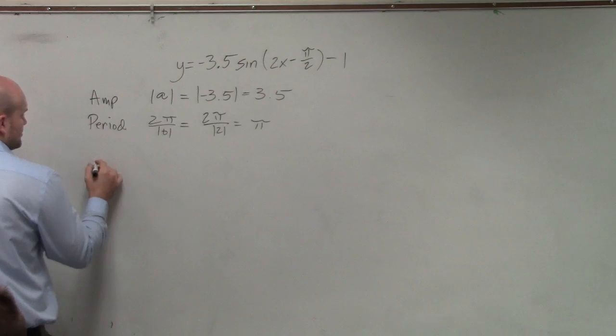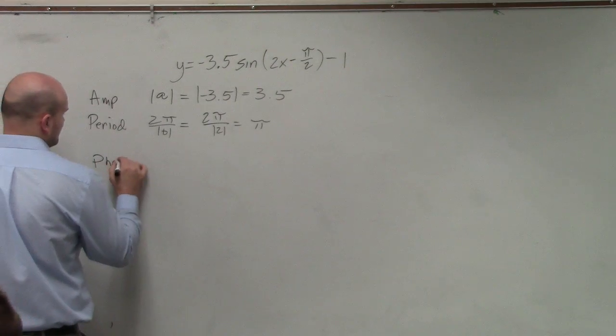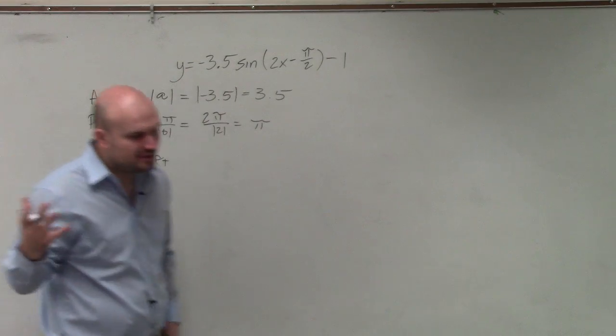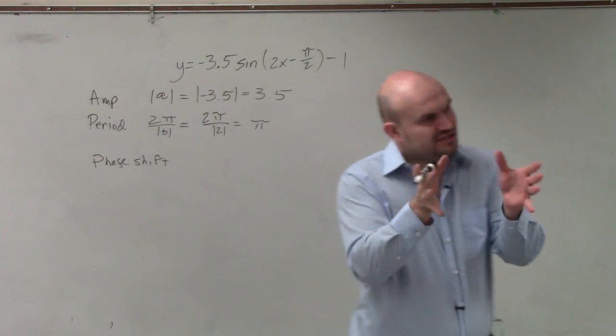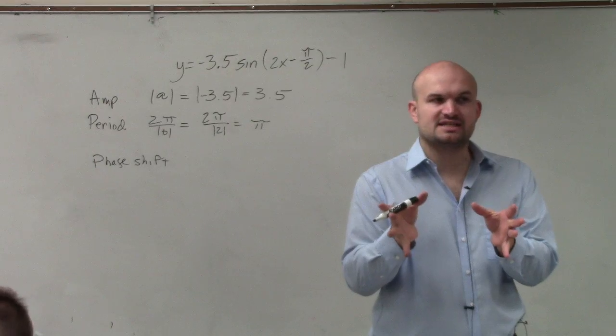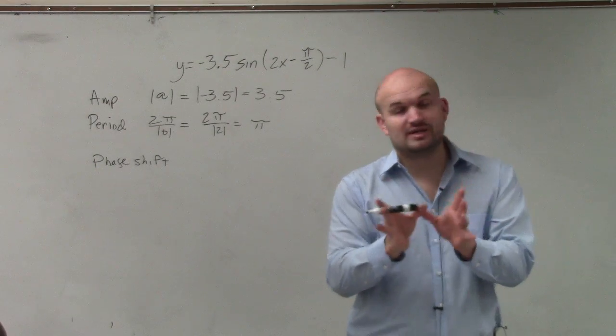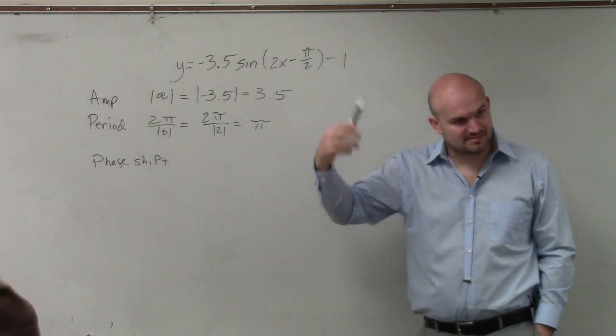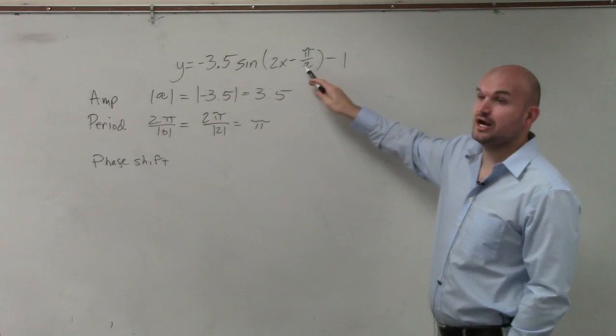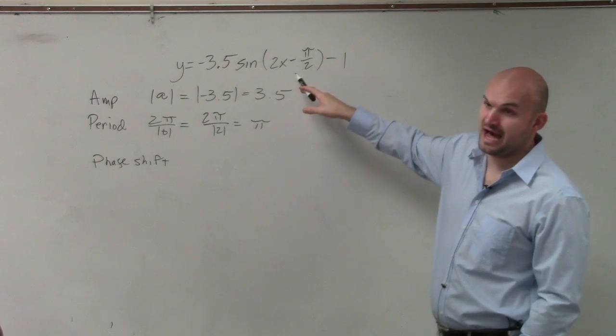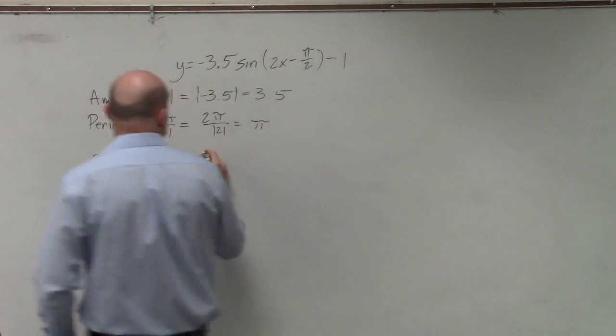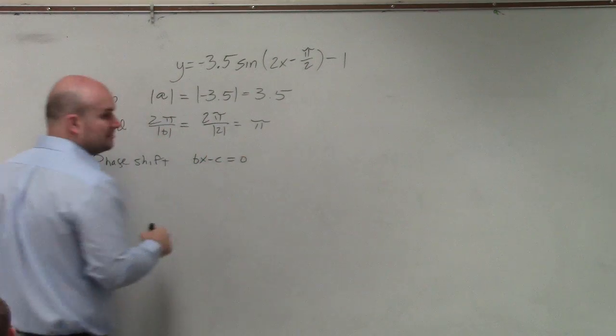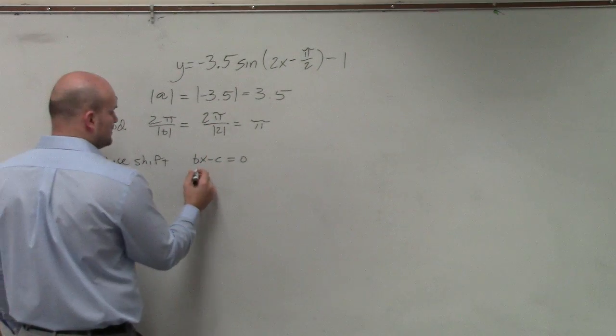The phase shift is the same as horizontal translation. But there's a systematic way to find it. Instead of just identifying it as π/2, we set Bx - C equal to 0 and solve. So I have 2x - π/2 = 0. When I solve, I add π/2